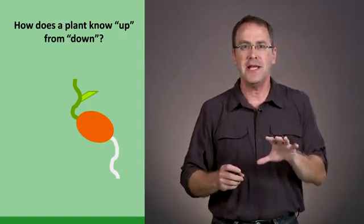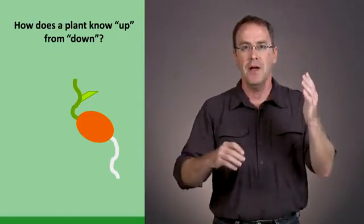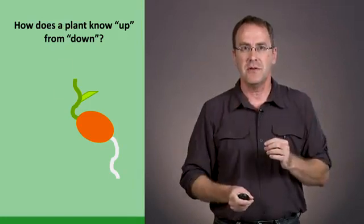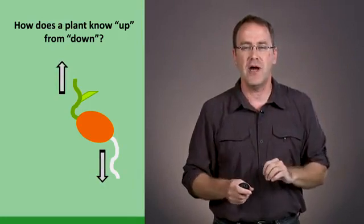What he reported was that if he takes a seedling and puts it on its side, the shoot would always grow up and the root would always grow down. And he hypothesized that this was because the plant was sensing gravity.